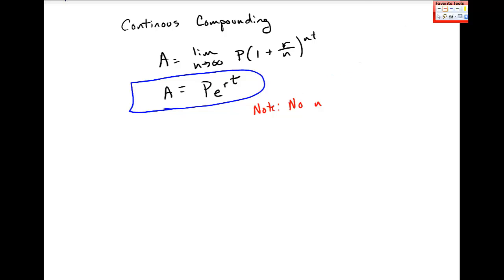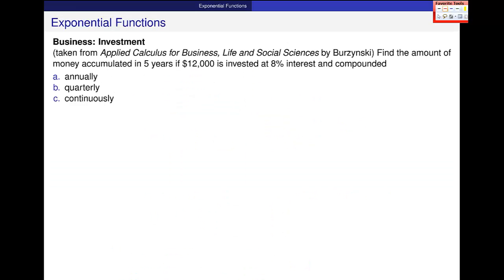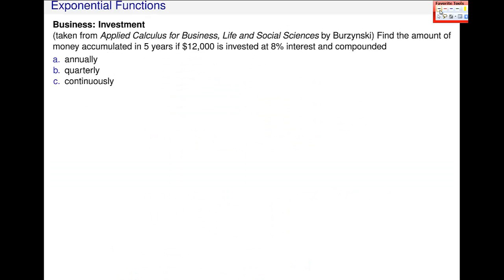Okay, so let's do an example. I have it right here. Okay, let's do a simple problem. Find the amount of money accumulated in five years if $12,000 is invested at 8% interest and compounded annually. Okay, so let's do that. Annually is N equals 1. I use this formula for compounding interest.